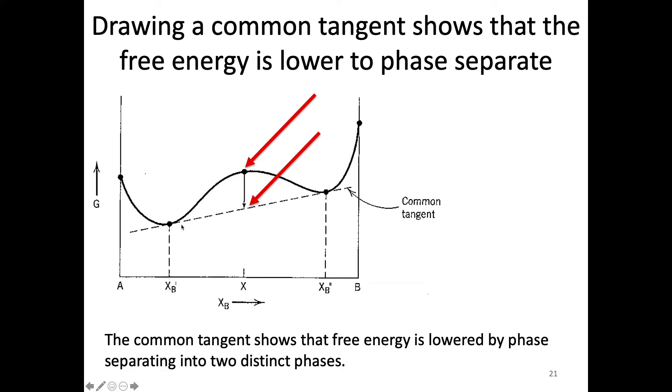What this is saying is that if I have a liquid or a solid with this composition XB prime, and I have another solution with the composition XB double prime, and I mix those two together, then the Gibbs free energy is going to follow along this dashed line. Whereas if I try to have one solution, imagine I have a composition XB prime and XB double prime, if I mix those two equally, half and half, you would have a composition here. The Gibbs free energy would be right here at this where the red arrow is pointing to.